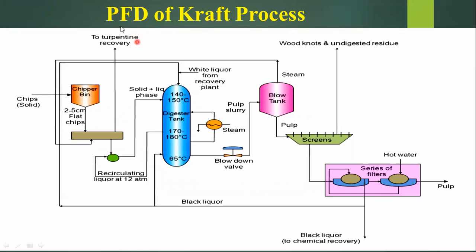Now we will see the process flow diagram of the kraft process. Solid chips from which we want to form pulp are added to the chipper bins. Cut logs are conveyed to the chipper where rotary blades with heavy knives reduce the wood size to 2 to 5 centimeter flat chips. This size reduction maximizes the penetration of process chemicals. The chopped flat chips are then sent to the digester. This continuous digester is 25 to 30 meters in size. Chips are preheated with volatilizing turpentine and non-condensable gases inside the heater.